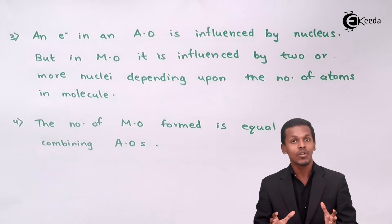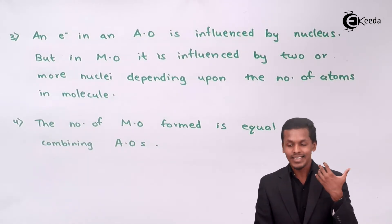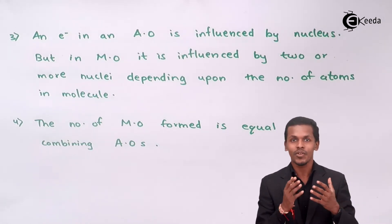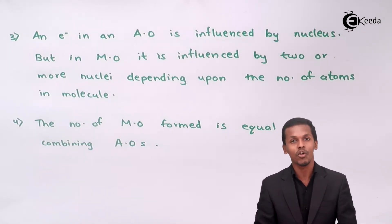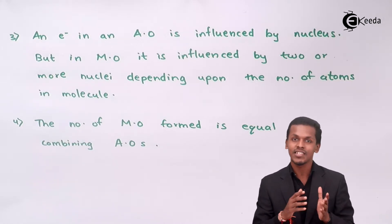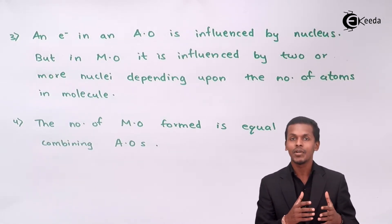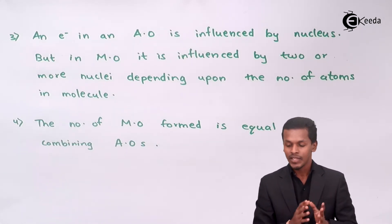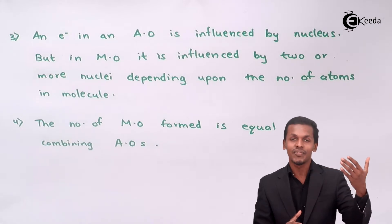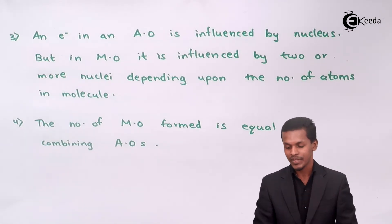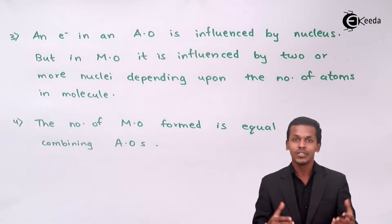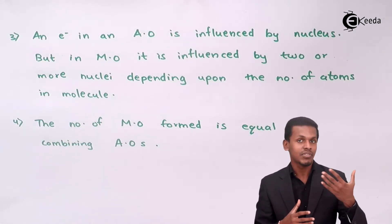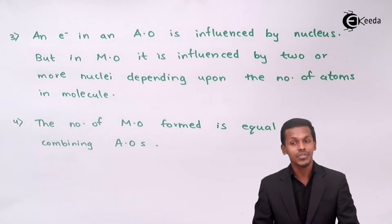This is a very vital difference: in an atomic orbital, only one nucleus influences all the electrons present in the atom. But when it comes to a molecule, different nuclei influence each other's electrons. So two or more nuclei will all have an influence on the electrons of the different atoms that are combining with each other.